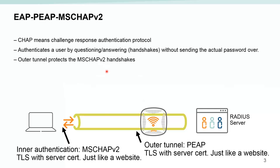So what is MSCHAPv2? MSCHAP is the Microsoft version of a Challenge-Response Authentication Protocol. What challenge-response protocols do is they work with credentials — if a client knows a credential and the server knows the credential, they can, without sending the credential itself over the line, send questions and answers in a handshake. At the end of that handshake, both the client and the RADIUS server have proven knowledge of the actual password without ever sending it.